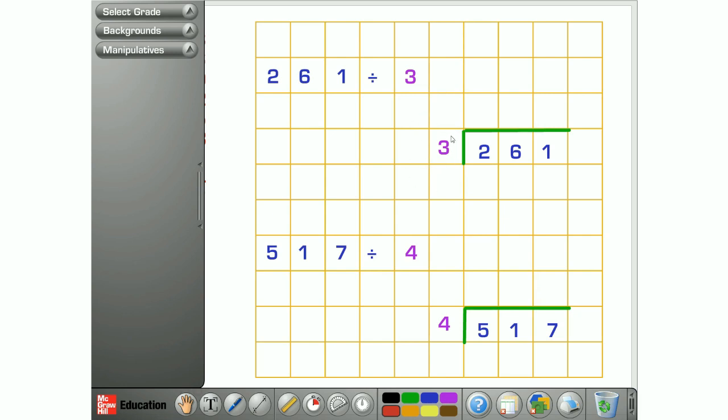So our 3 goes on the outside of the bus stop, that's the number we're dividing by, and the 261, the number we're dividing, goes inside or underneath the bus stop. Now what we're going to do is see how many times this number, the number we're dividing by, goes into this number.